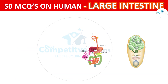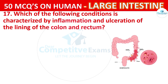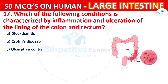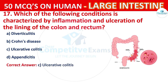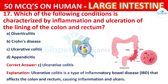Question number 17. Which of the following conditions is characterized by the inflammation and ulceration of the lining of the colon and rectum? Your options are: Diverticulitis, Crohn's disease, Ulcerative colitis, or Appendicitis. The correct answer is C, that is Ulcerative colitis. Ulcerative colitis is a type of inflammatory bowel disease (IBD) that affects the colon and rectum, causing inflammation and ulcers.